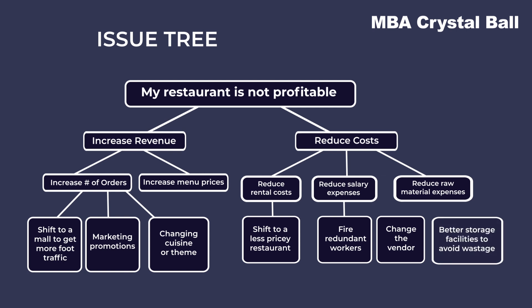How does an issue tree help? It enables consultants to consider all options separately and exclusively, and suggest the best option to the client. It helps create a common understanding among team members about the problem-solving framework and helps focus the team's efforts. It also facilitates work distribution. Consultants may need to trim the branches — doing away with options not worth pursuing. For example, increasing prices may not be an option for various reasons, and that branch can be trimmed. In the real-world context, problems can be much more complex, and suggested solutions must be backed by hard data.